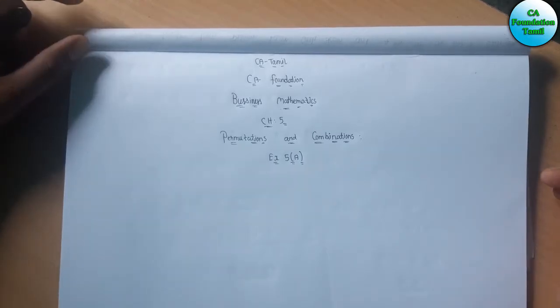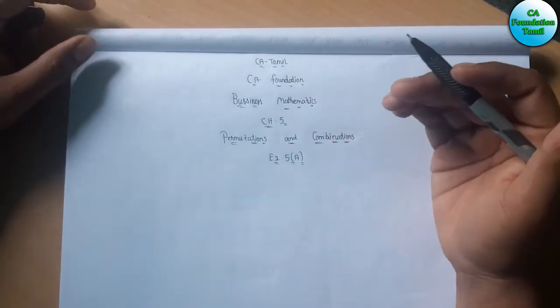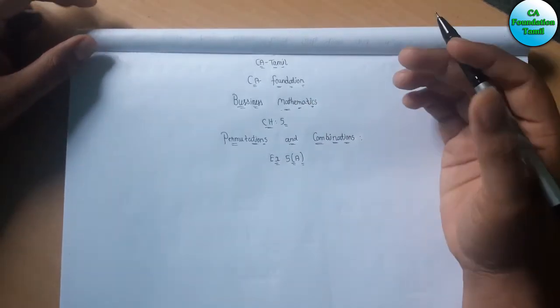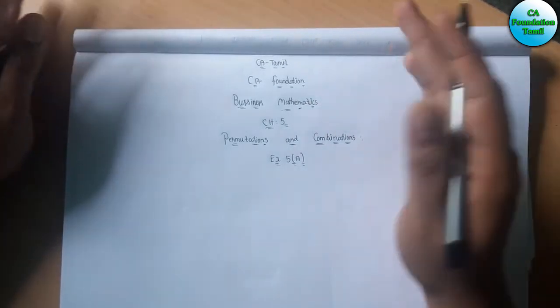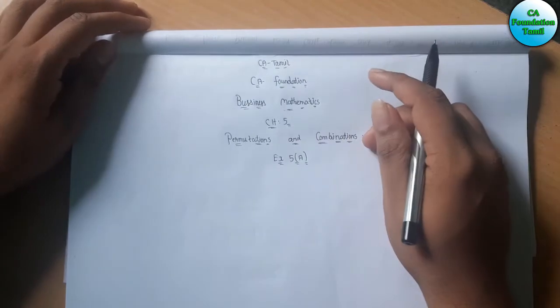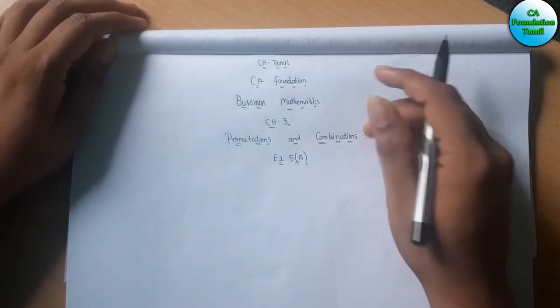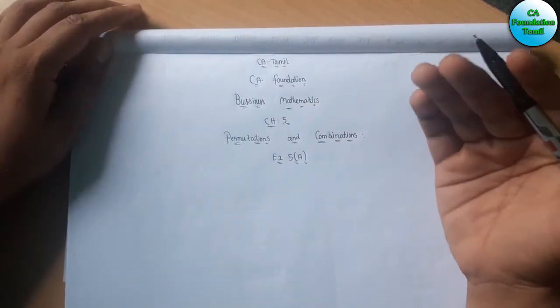CA Tamil. CA Foundation, Business Maths, Chapter 5: Permutation and Combination. Chapters 1, 2, 3, 4 are available on the Elamina channel. You will see them in the channel. Now we begin Chapter 5: Permutation and Combination.